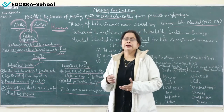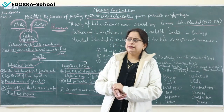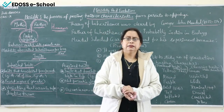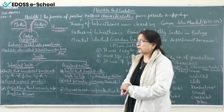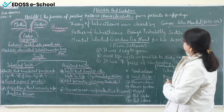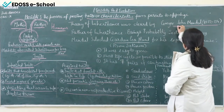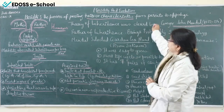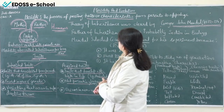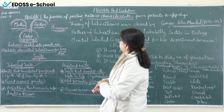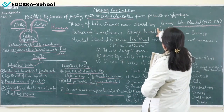Mendel did 25 to 30 years of work with many experiments and gave three laws related to heredity. He submitted all his theories to a particular department and returned to his monastery. Unfortunately, he passed away in 1884 and did not receive recognition during his lifetime. After his death, his research was analyzed and found to be very accurate. He then received credit as the father of genetics.